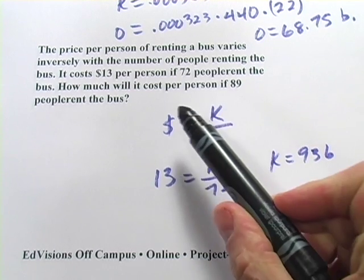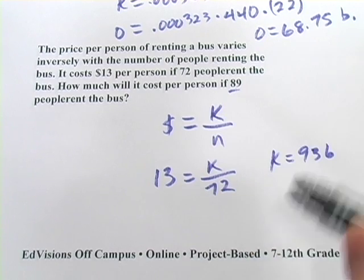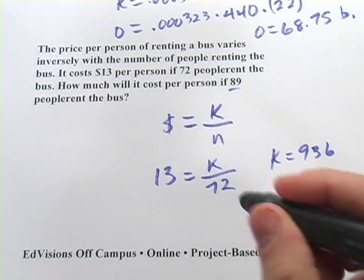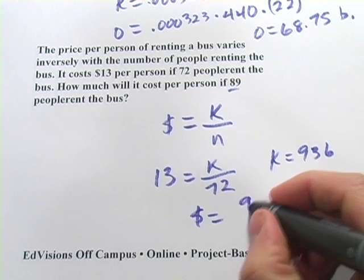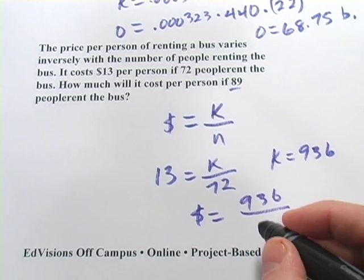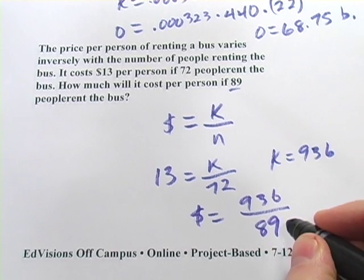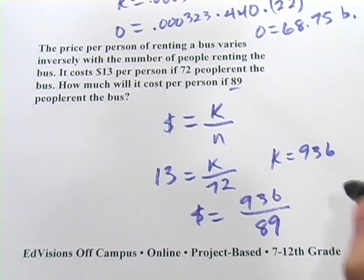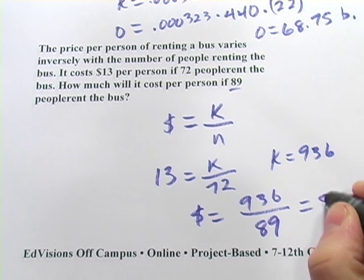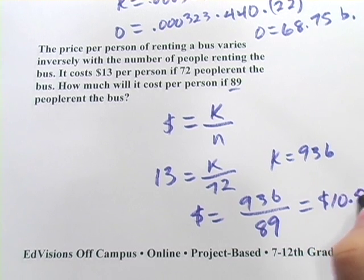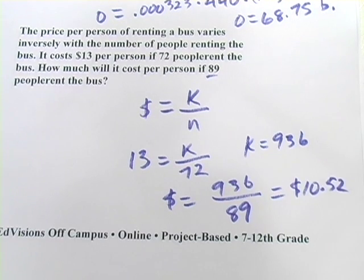And then it asks us to figure out how much it would cost if you had 89 people renting the bus. So let's plug that in our formula, how much does it cost? And we've got our constant of variation, 936, when 89 people rent the bus. And so 936 divided by 89, you're going to get $10.52 or so per person.